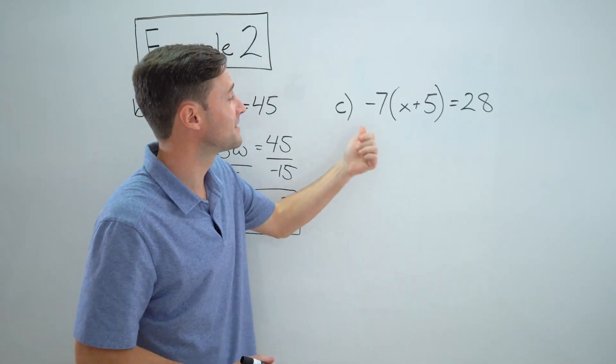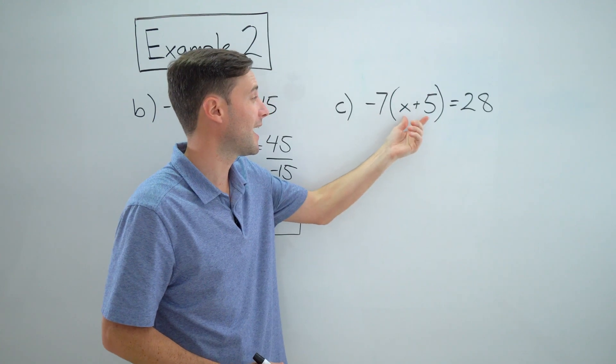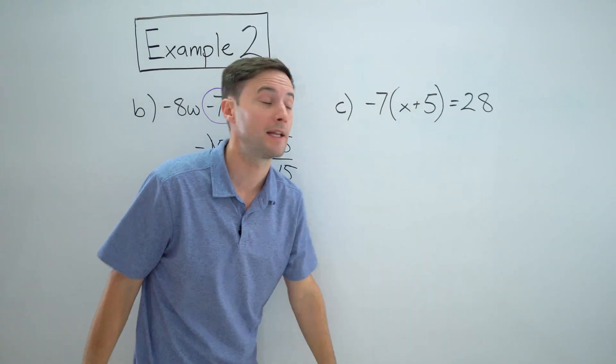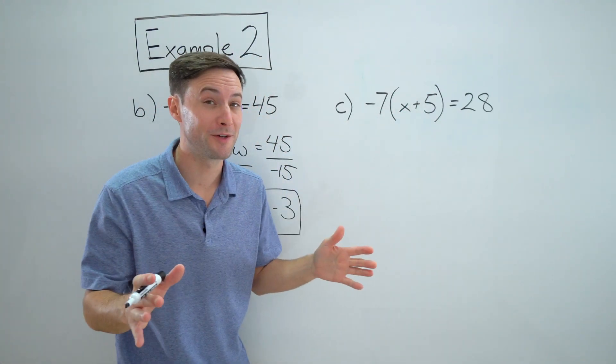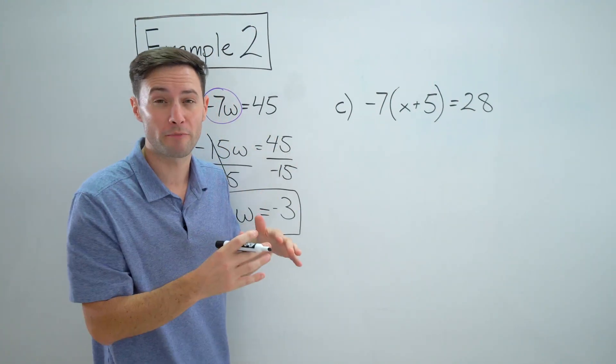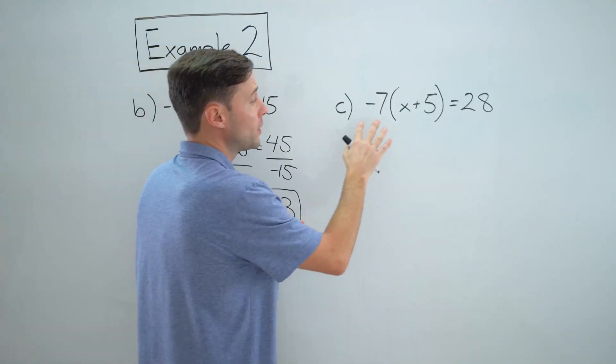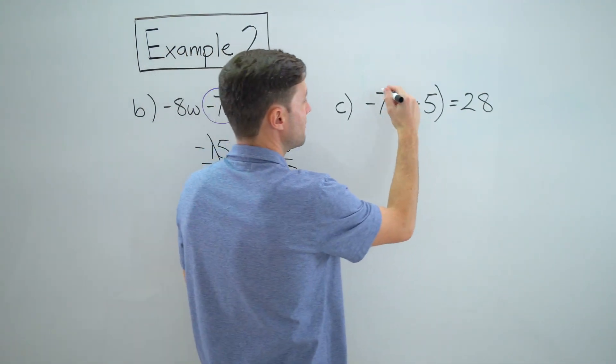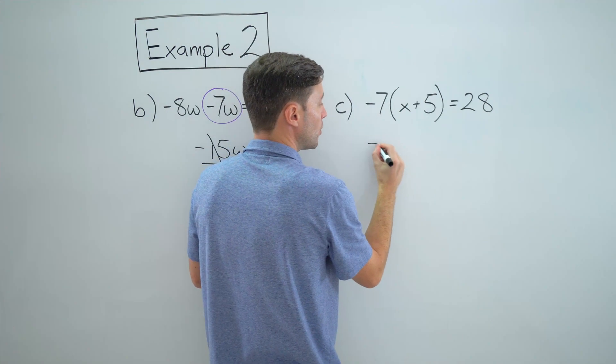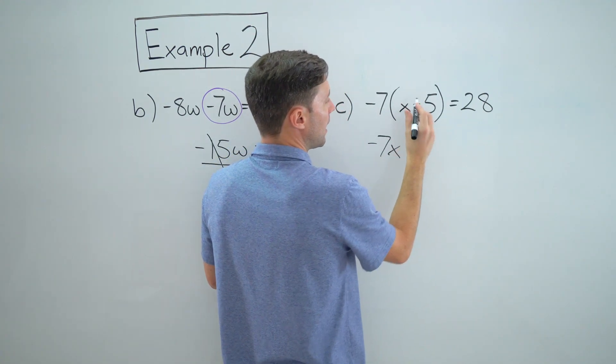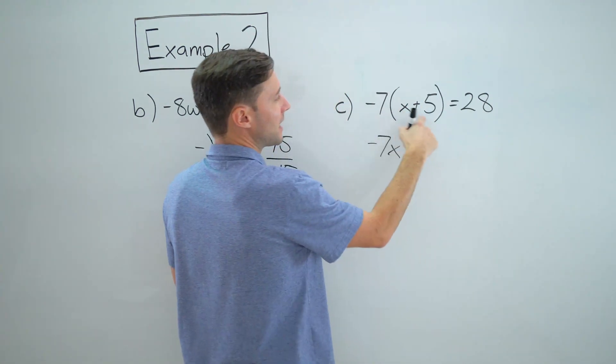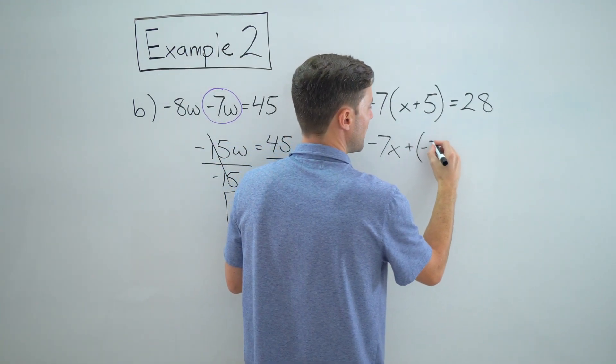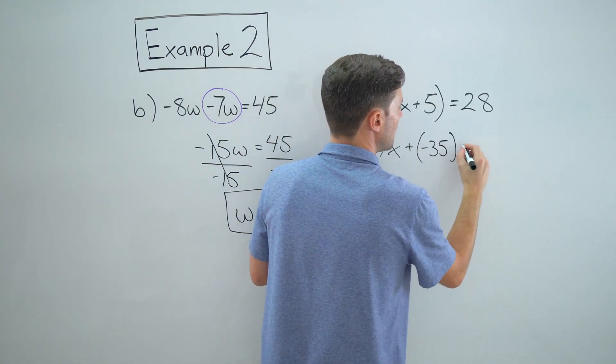All right, let's move on to C. Negative seven times in parentheses x plus five equals 28. There's a couple ways to do this. I'm going to show you how to use the distributive property first. So if we want to distribute the negative seven to every term inside, negative seven times x would be negative 7x plus negative seven times five is going to be negative 35 equals 28.